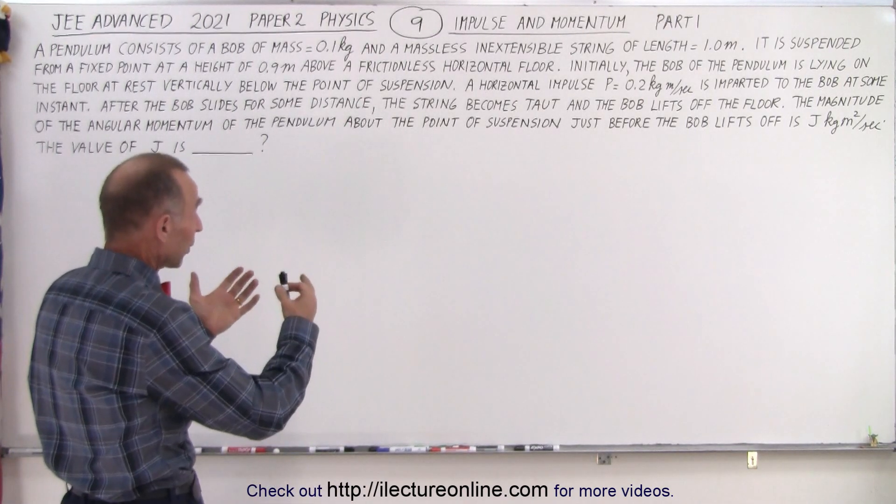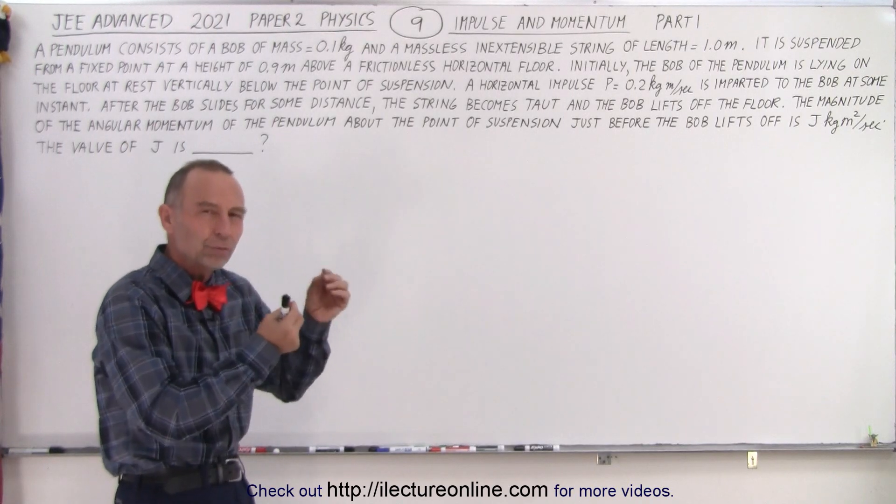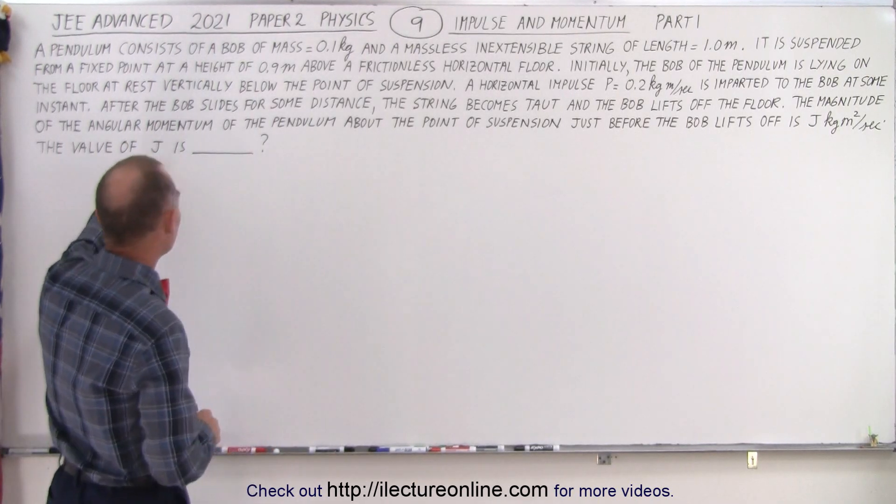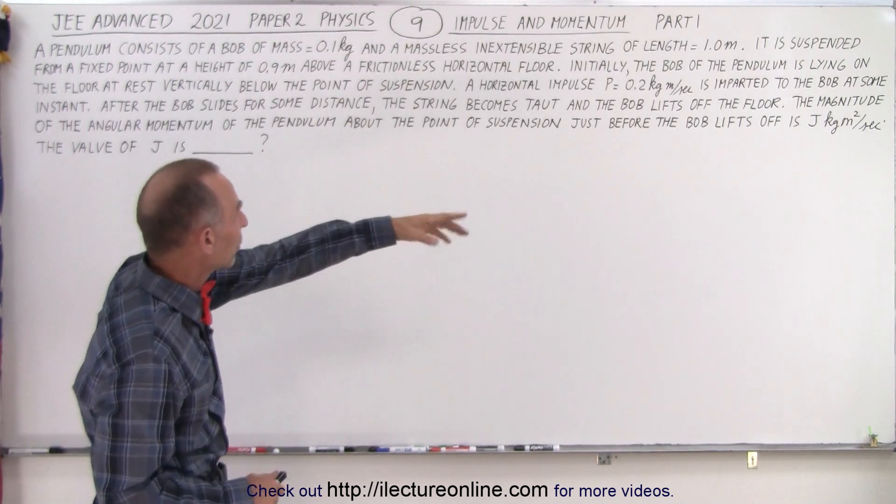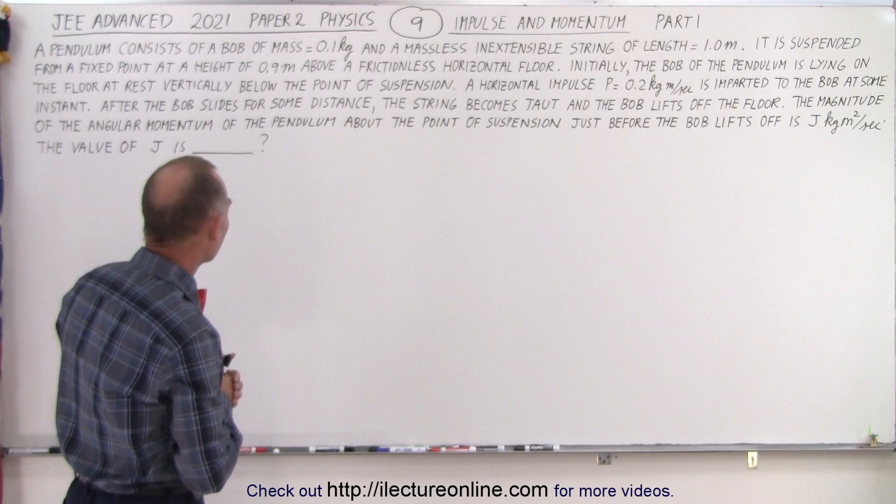This is part one of a two-part problem. The first answer they want to know is the value of J where J represents, if you look at the units, the angular momentum of the pendulum.